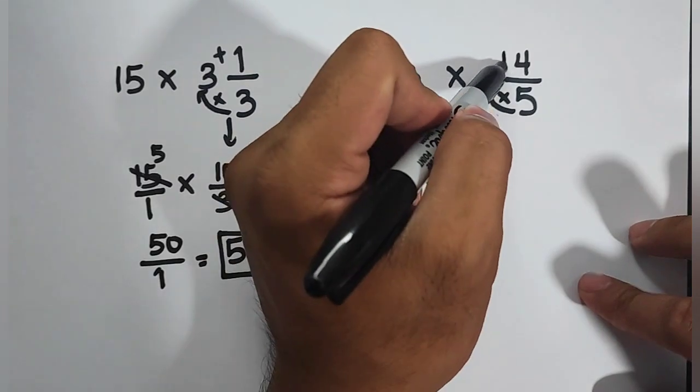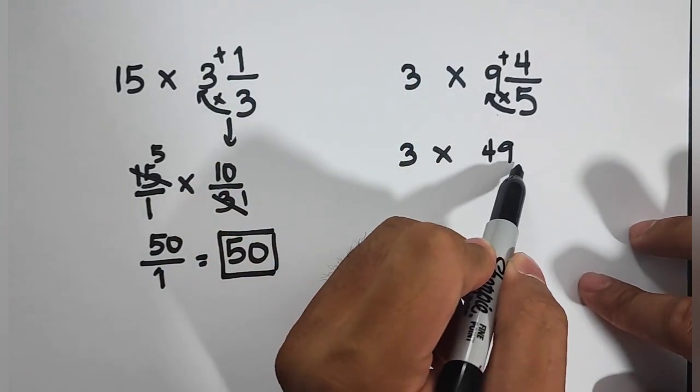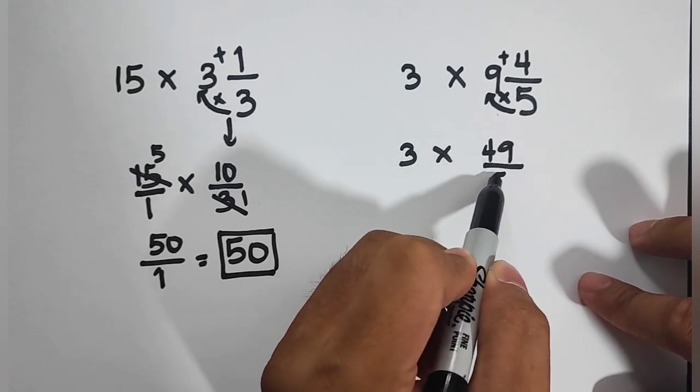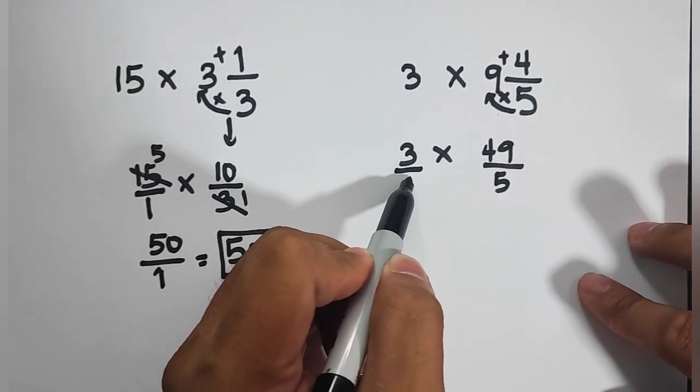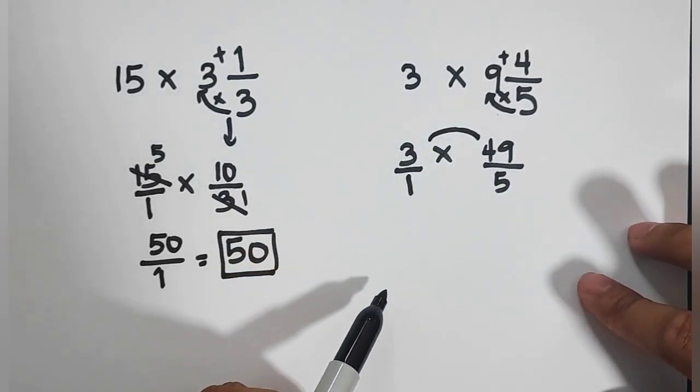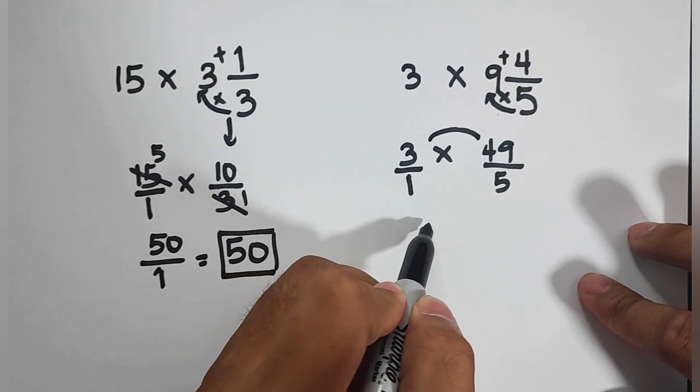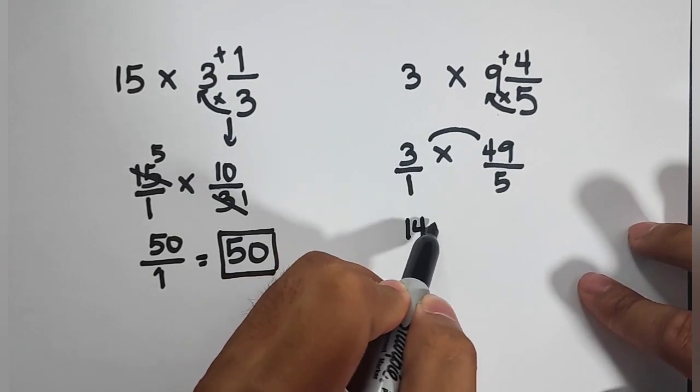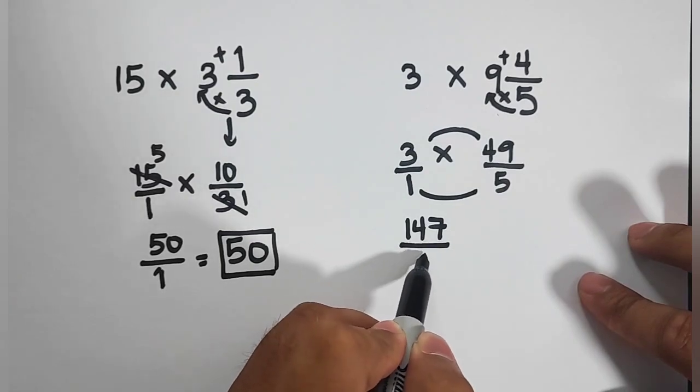So we have 5 times 9, that is 45, plus 4, that is equal to 49, over 5. So we will express this into a fraction. So we have now, 3 times 49, 3 times 49 is equal to 147. 1 times 5, that is equal to 5.